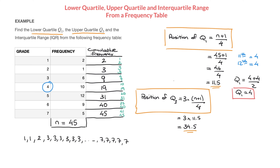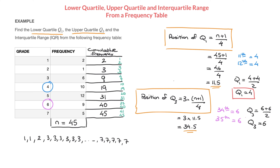A position of 34.5 tells us Q3 lies between the 34th and 35th values in our list. Using the cumulative frequency column, we see that from position 32 to 40, grades are all 6s. Since both 34 and 35 fall within that range, the 34th and 35th values are both 6. So Q3 = (6 + 6) / 2 = 6. The upper quartile Q3 equals 6.